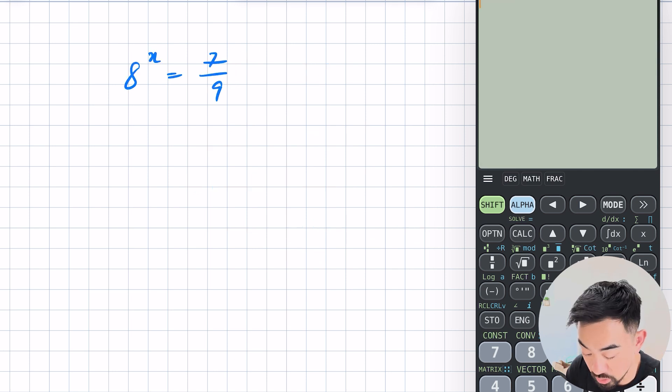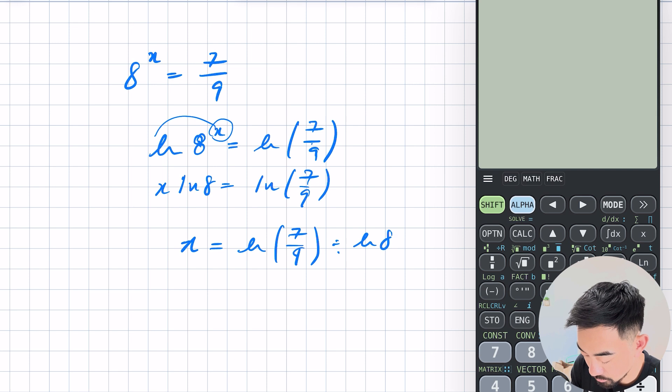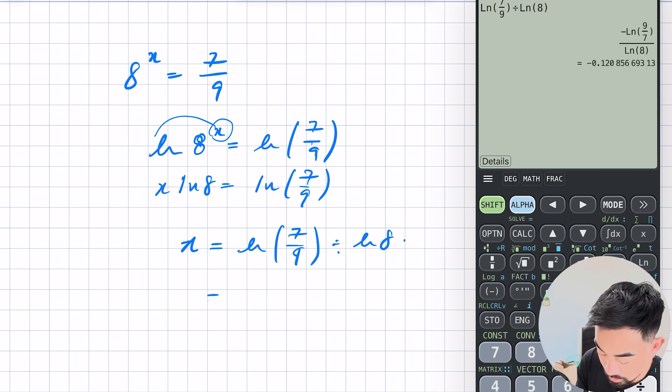All right so I've got 8 to the power of x is equal to 7 over 9. Let's do the same as before and log both sides. Now remember I can bring this x out the front using the power law. So x ln 8 is equal to ln 7 over 9. I'm trying to get x by itself so let's divide both sides by ln 8. So let's see what my answer is ln 7 over 9 divided by ln 8. That gives me minus 0.121 approximately.